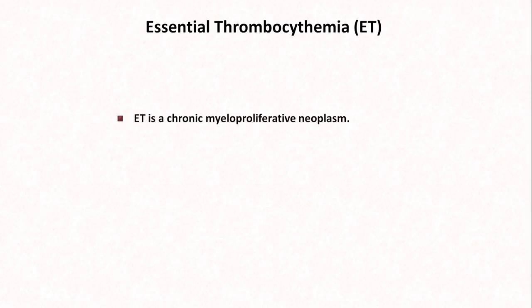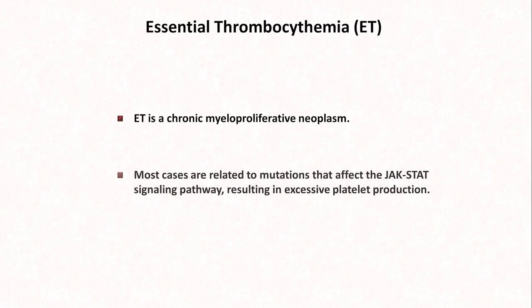ET is a chronic myeloproliferative neoplasm — a term used to describe any slow-growing cancer in the bone marrow which results in the overproduction of one or more types of blood cell. ET results primarily in the overproduction of megakaryocytes, which are the precursor cell to platelets. Most cases are related to mutations that affect the JAK-STAT signaling pathway, but can also involve the receptor for thrombopoietin, a growth factor regulating the growth of some blood cell lines.